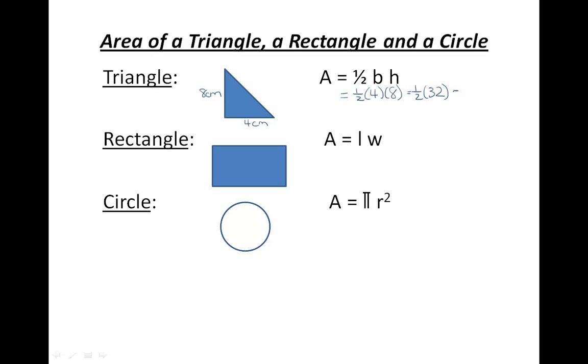One half times 32 is 32 over 2. Enter these numbers in your calculator, 32 divided by 2, and your final answer will be 16 centimeters squared.